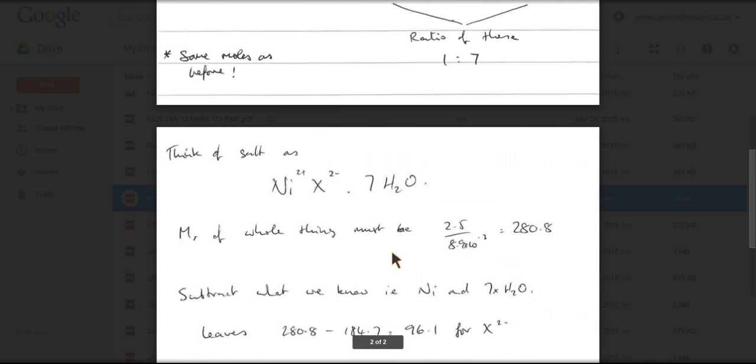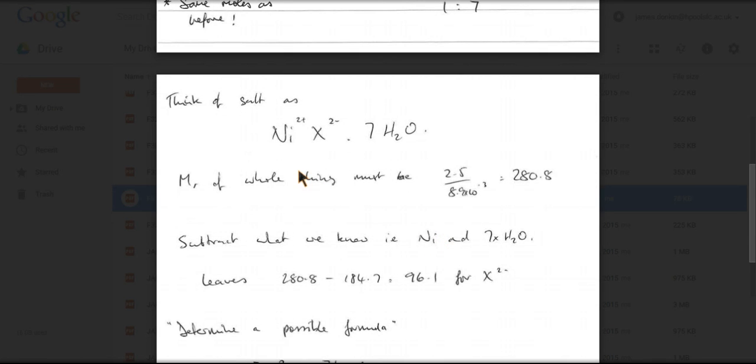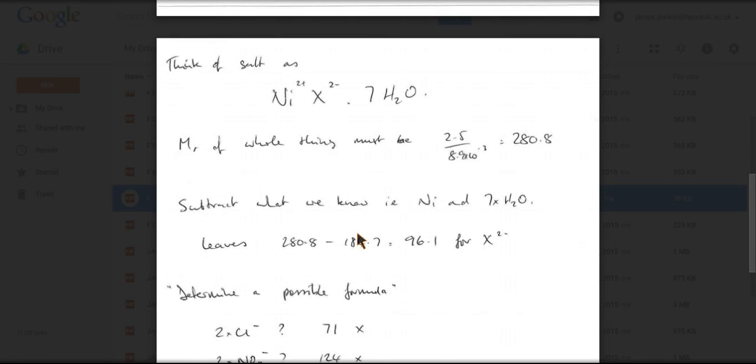So just reminding myself there, the MR of the whole thing is 280.8. And now I'm going to subtract from that what I know about the formula. So I know there's 1 nickel in there, and I know that there are 7 waters. So that comes out at, there's a remainder of 96.1 grams for that negative ion.